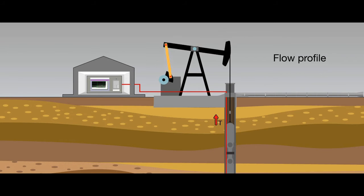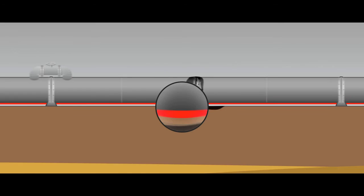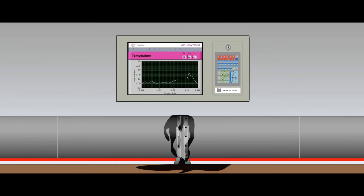To detect oil leakage, the sensor must be installed under the pipeline. When a leakage of oil is occurring, the system will detect a change in temperature level in that specific area.